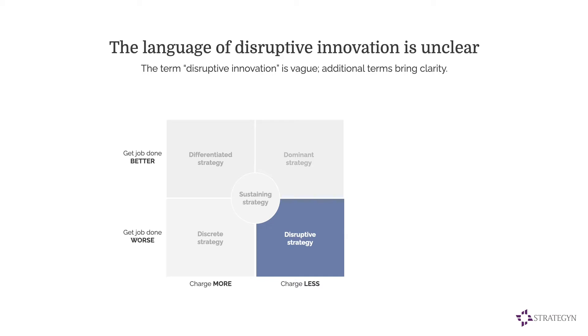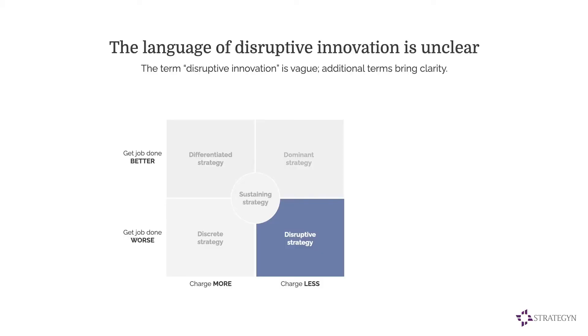We wanted to add some additional detail and definition here to help bring to light how the process actually works. First, we're going to describe the disruptive strategy, which we talked about already. It's a product that you've decided to put in the market that's getting the job done worse, and you're charging less. Disruptive strategy describes a strategy employed for a specific product in a given situation.